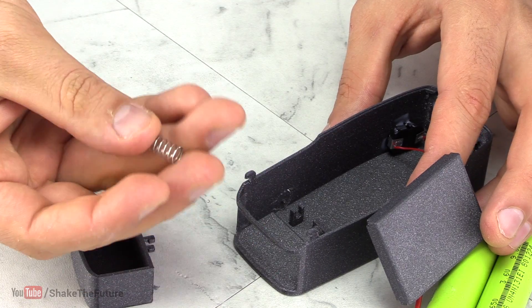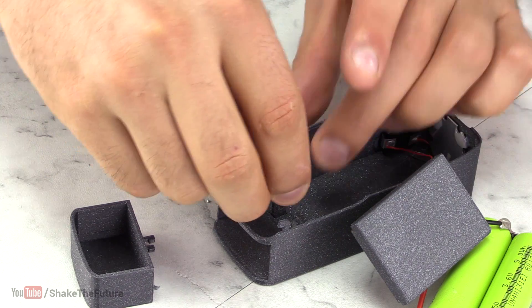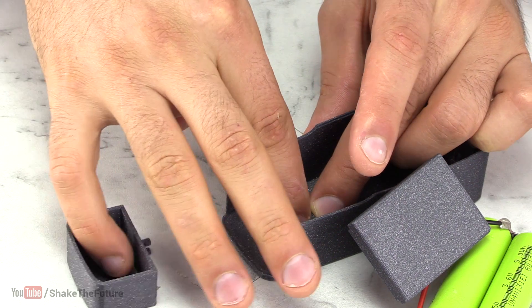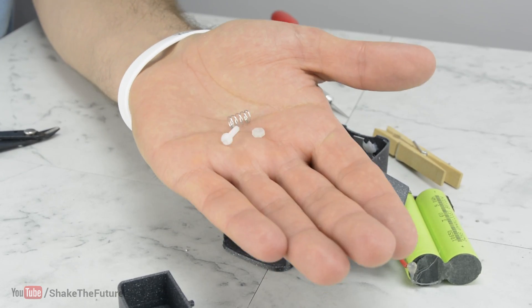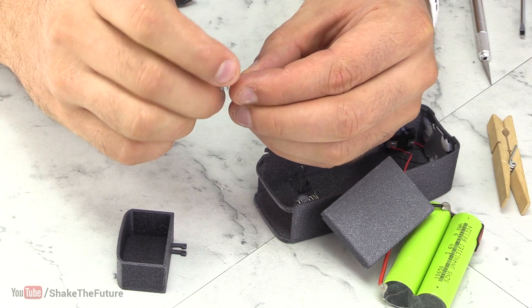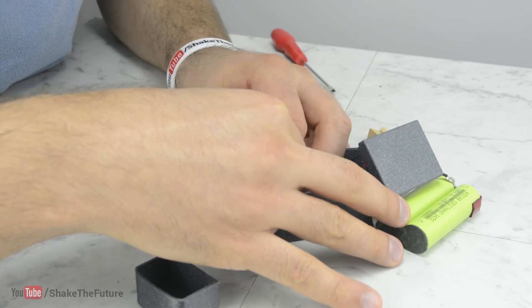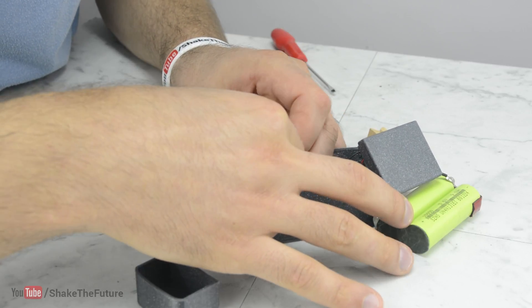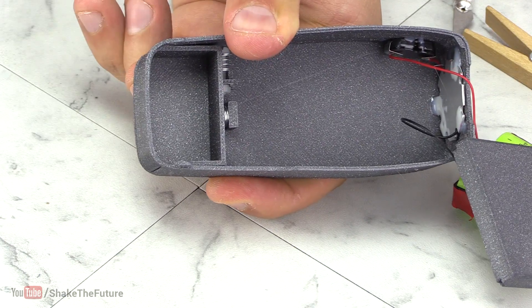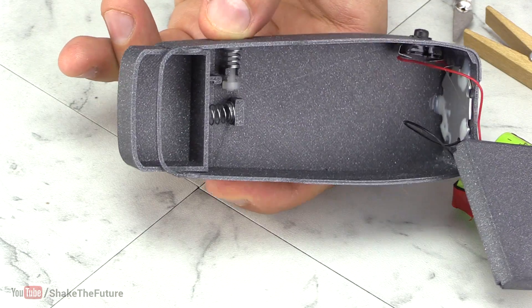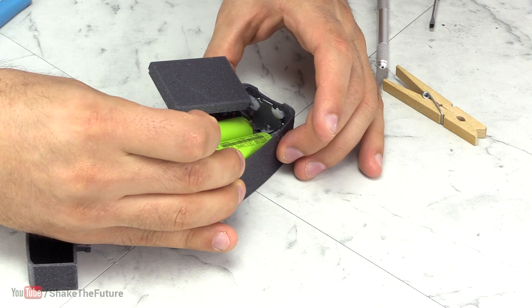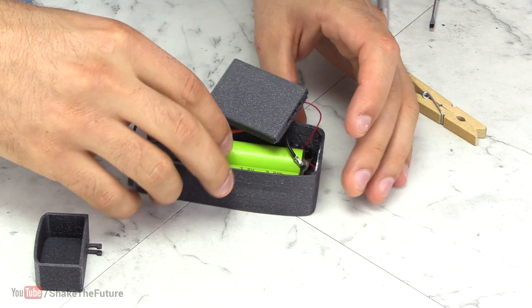I used two springs, a bolt and a nut for the draw mechanism. And last I glued the battery to the case and put it all together.